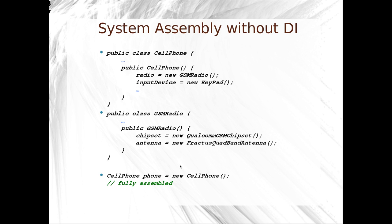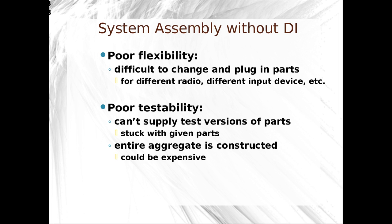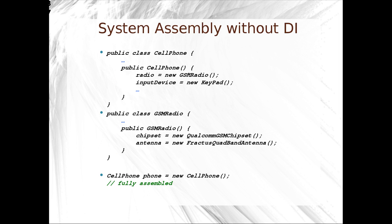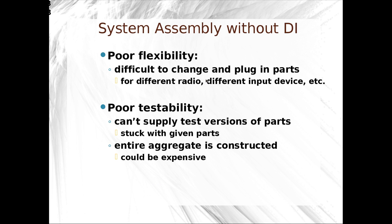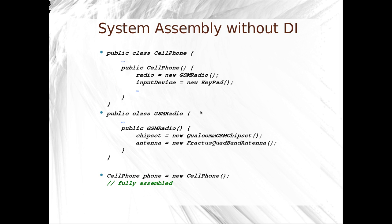But what if we want to test this cell phone? What if we want to say, what happens when the radio fails? How do we put in a new test radio? Basically, it has poor flexibility — it's difficult to change and plug in parts. Different radios, different antennas, fake radios, fake parts — those are all hard. Furthermore, testability is hampered because we can't supply test versions of parts. We can't use a fake GSM radio or use a fake keypad where we can send our own keypad commands, because the entire aggregate is fully constructed. To redo this, we'd have to rebuild a lot of things, so it's very expensive. And that's without dependency injection.